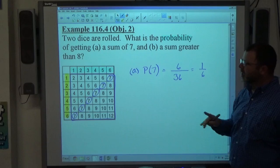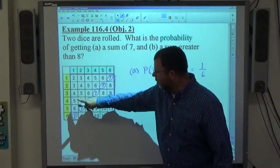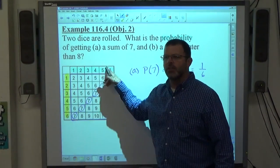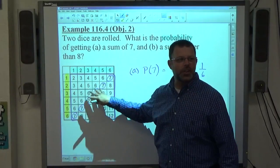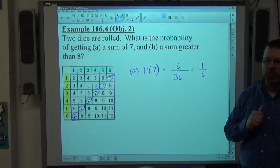Be careful when you're counting. Only count the end result. Don't count what you got on the first die or what you got on the second die. Only the sum of the two dice or the outcomes that we're considering.